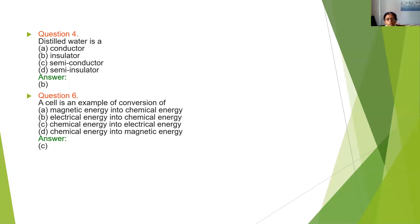A cell is an example of conversion of what? A cell is made up of chemicals, so chemical energy is converted into electrical energy. The options are: magnetic energy into chemical energy, electrical to chemical, chemical to electrical, or chemical energy into mechanical energy. The answer is option C — chemical energy into electrical energy.